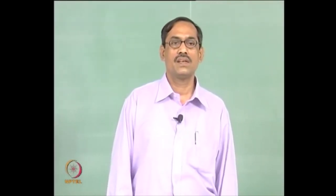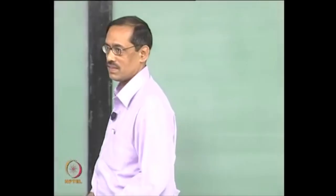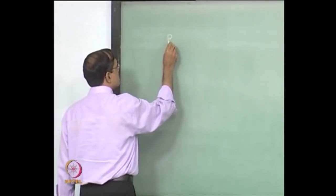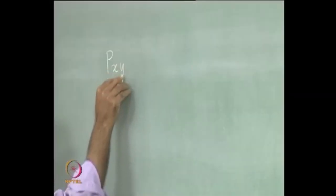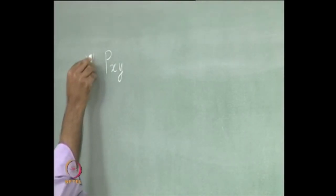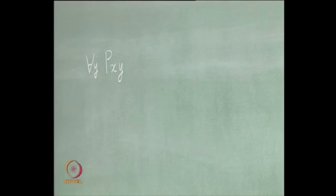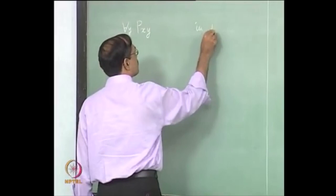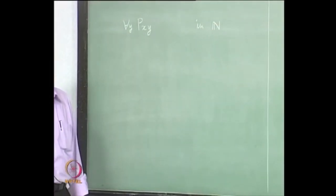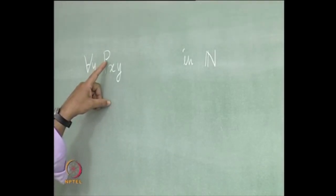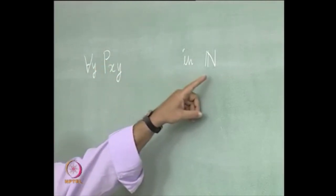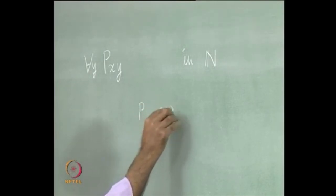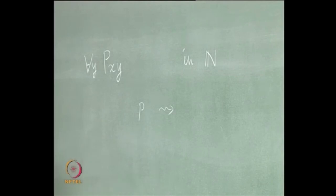Let us consider how to interpret or how to use these formulas. Suppose I take one example: P x y, with quantification over y. Consider this formula. Suppose I want to interpret it in the domain of natural numbers. While interpreting, the first thing we have to do is think of P, which is a binary predicate, as some binary relation over the natural numbers. This P is now mapped to some binary relation — let us take 'less than'.